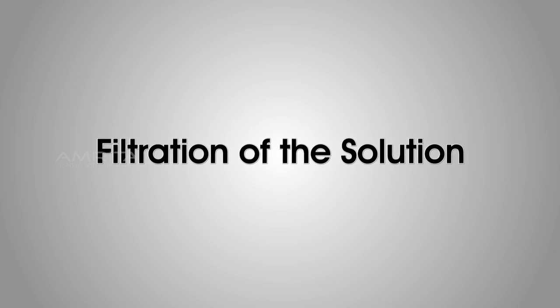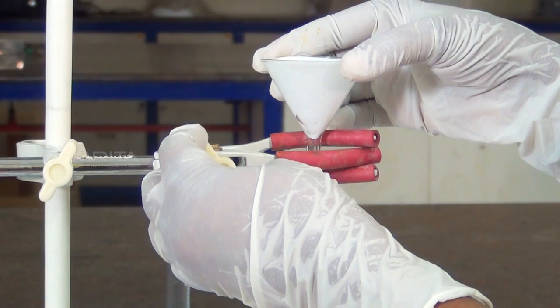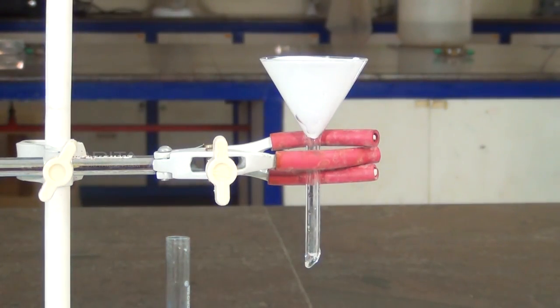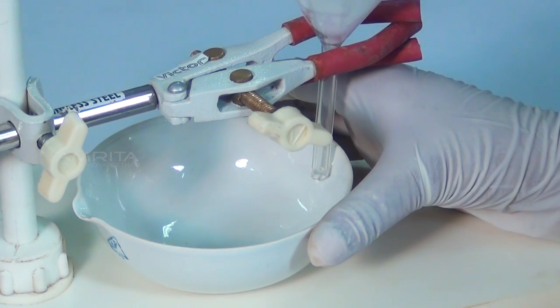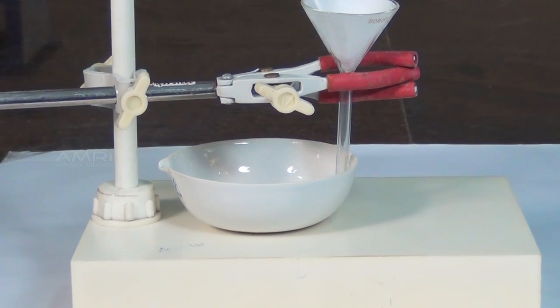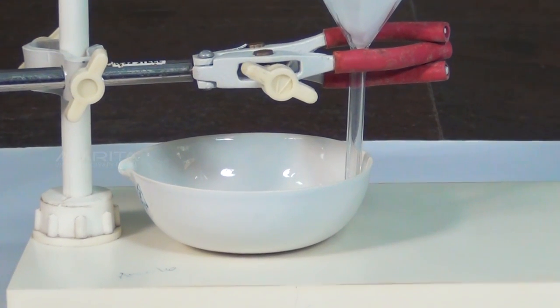Filtration of the solution. Clamp the funnel in which a filter paper is fixed to the stand. Place the china dish under the funnel. The stem of the funnel should touch the wall of the china dish to avoid the solution splashing out.